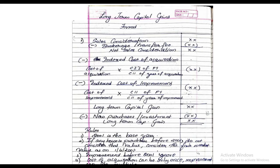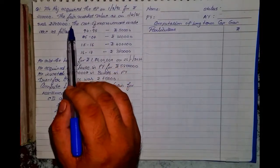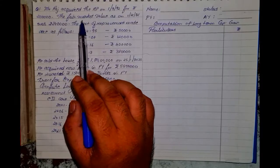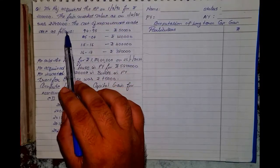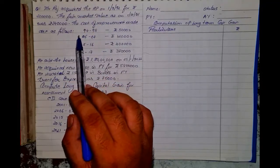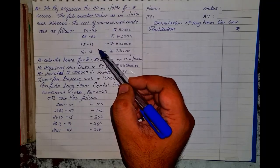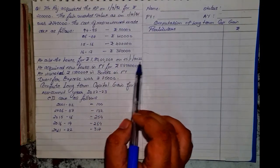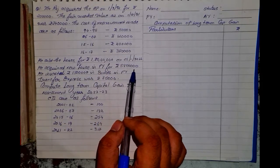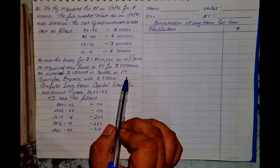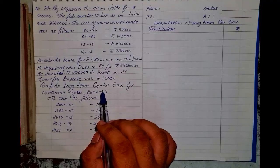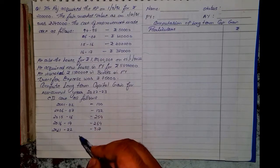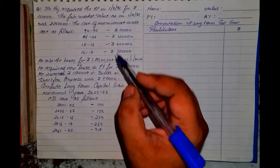Now let us see how to solve the sum. The question: Mr. Raj acquired a house property on 1st March 1992 for ₹2 lakhs. The Fair Market Value as on 1st April 2001 was ₹2,40,000. Cost of improvements were made in 1994–95, 2006–07, 2015–16, and 2016–17. He sold the house for ₹1 crore 80 lakhs on 25th January 2022. He acquired a new house for ₹58 lakhs, invested ₹15 lakhs in bonds in the previous year, and transfer expenses were ₹75,000. Compute Long-Term Capital Gain for AY 2022–23.